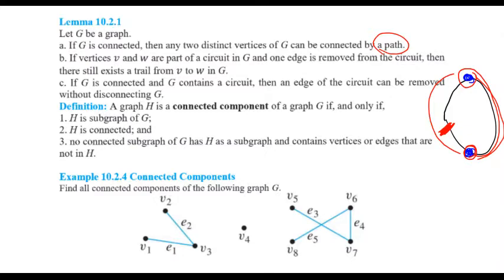In part C of this lemma, we say: if G is connected and G contains a circuit, then an edge of the circuit can be removed without disconnecting graph G. Part C is a direct conclusion of part B, because if we remove one edge from a circuit, there still exists a trail between any two vertices of that circuit. That's why removing one circuit edge does not disconnect the graph.